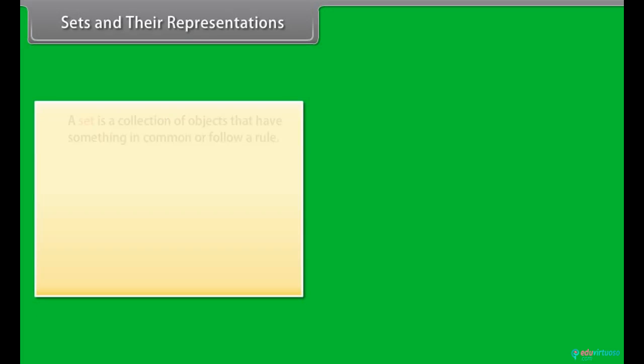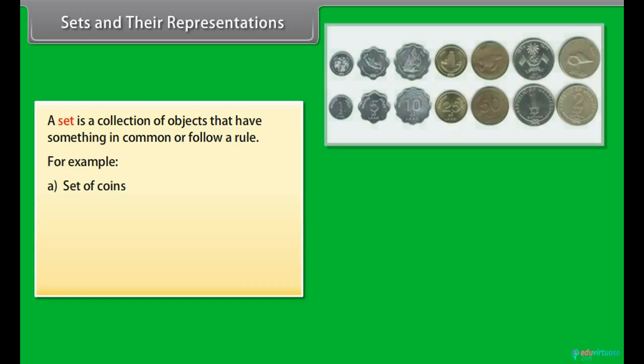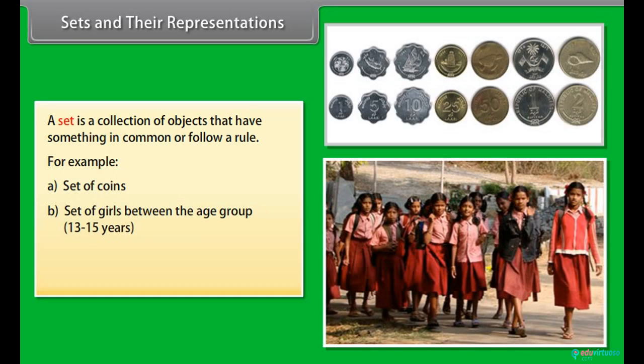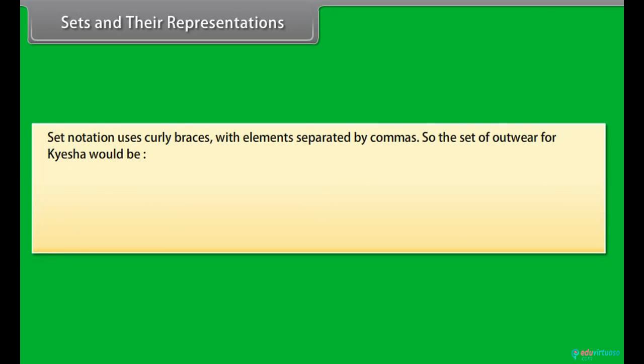Sets and their representations. A set is a collection of objects that have something in common or follow a rule. For example, set of coins, set of girls between the age group 13 to 15 years. The objects in a set are called its elements.